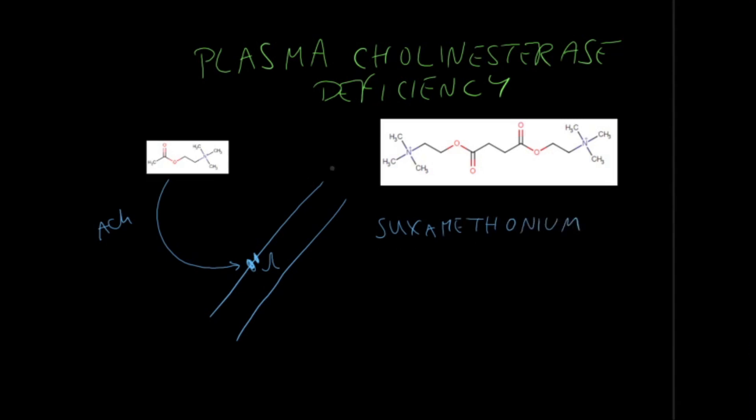Succomethonium also binds to the receptor, but you don't get a response because it binds, opens the channel, then blocks it. So you end up not getting a response here. It's a way of paralyzing somebody during surgery. Succomethonium itself is broken down by cholinesterase, so that means this succomethonium is kept under control. There's a balance.